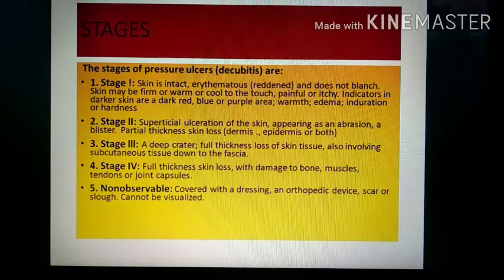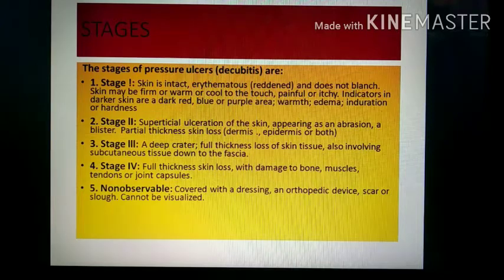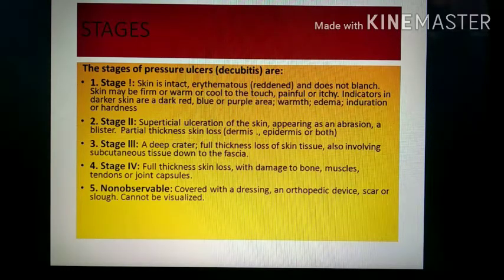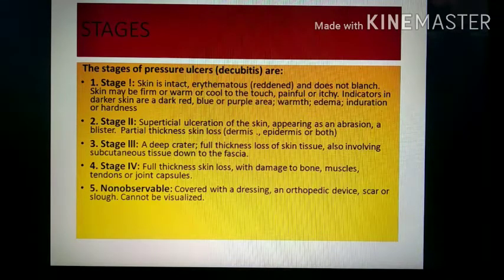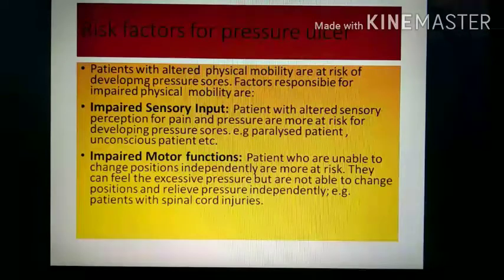Stage 4 involves full thickness skin loss with damage to bones, muscle, tendon, and joint capsule. This stage may also be covered with a dressing or orthopedic device where the scar or slough cannot be visualized.